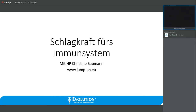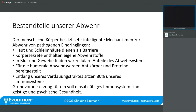Dann starten wir mal mit dem Thema und schauen uns an, was wir für unsere Abwehr tun können. Wenn wir über das Immunsystem sprechen, denken wir als allererstes an die Dinge, die wir kompliziert im Unterricht gelernt haben – humorale und zelluläre Abwehr und dergleichen. Es gibt jedoch etwas, was davor steht: die erste Barriere, die uns schützt, sind unsere Haut- und Schleimhäute, die als Barriere dienen.